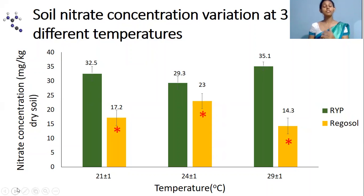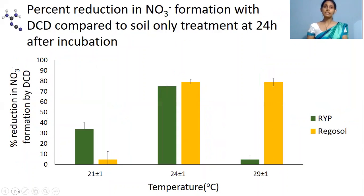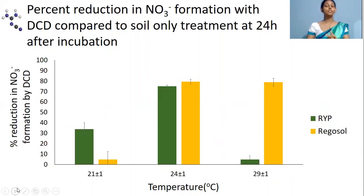This is the reason for DCD performing poorly in RYP soil compared to Regosol soil. Now, looking at this graph related to the first experiment, it represents the percent reduction in nitrate formation with DCD.